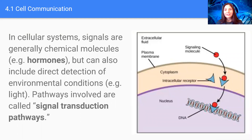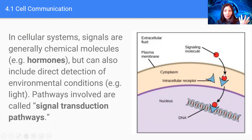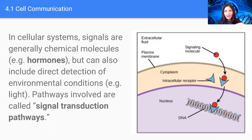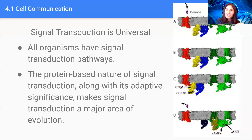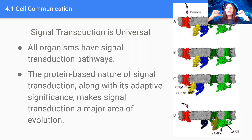Pathways involved are called signal transduction pathways. We have a signaling molecule that binds with the receiving protein, or if it's non-polar it can go directly through the plasma membrane, and eventually it can cause the up-regulation or down-regulation of a gene, meaning the gene is either expressed or repressed. Signal transduction is completely universal whether you are a tiny prokaryotic bacteria or a super advanced multicellular organism such as a dolphin.